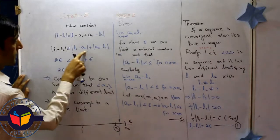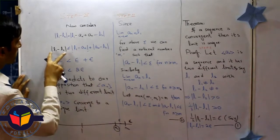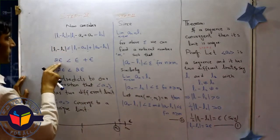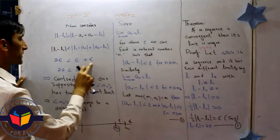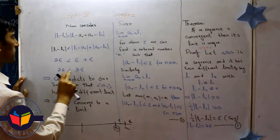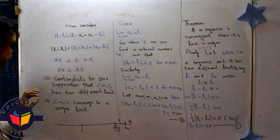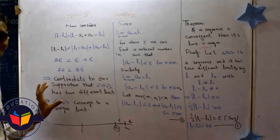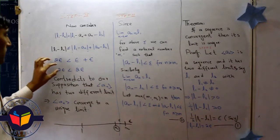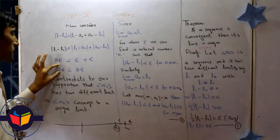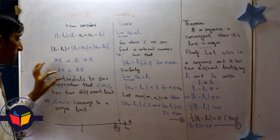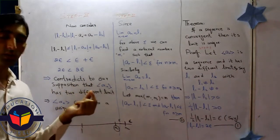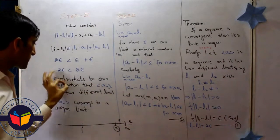And you know from equation 1, we can write 2 epsilon here: here is epsilon, here is epsilon. So the result is 2 epsilon is less than 2 epsilon. That is a totally wrong result. That does not hold in mathematics. It means the contradiction to our supposition that a_n has two different limits. This is just a contradiction.